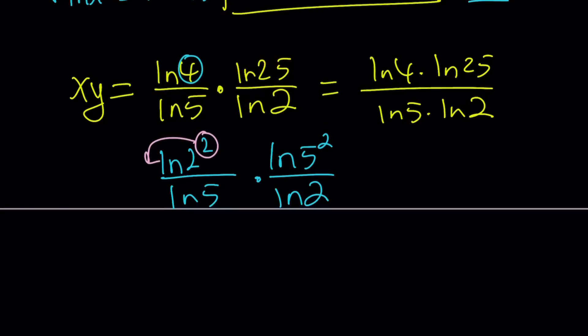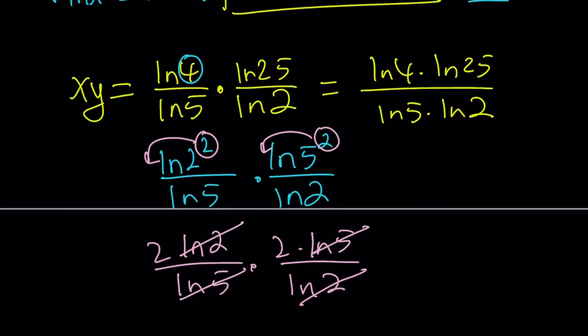Move the 2 to the front. You're going to get 2 ln 2 over ln 5. And move the 2 to the front. 2 ln 5 over ln 2. ln 2 is going to cancel out. ln 5 is going to cancel out. Yay! Everything cancels out.